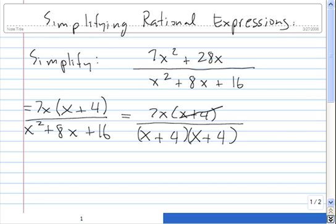So we need to cancel this x plus 4 with that x plus 4, and we're left with 7x in the top and x plus 4 in the bottom.